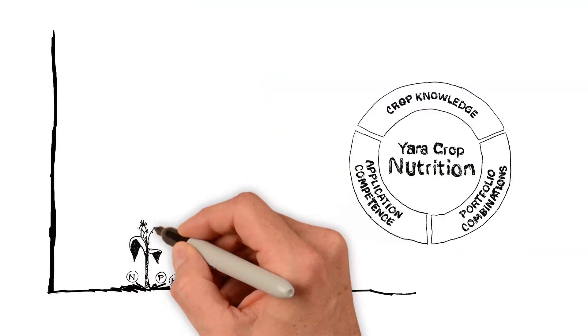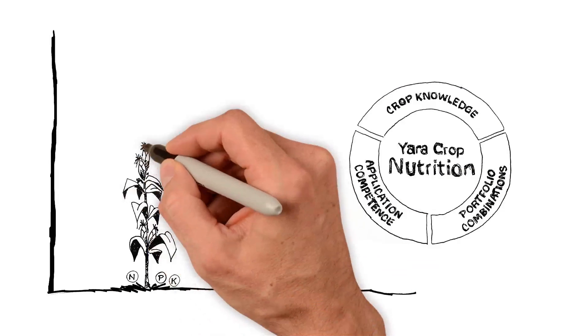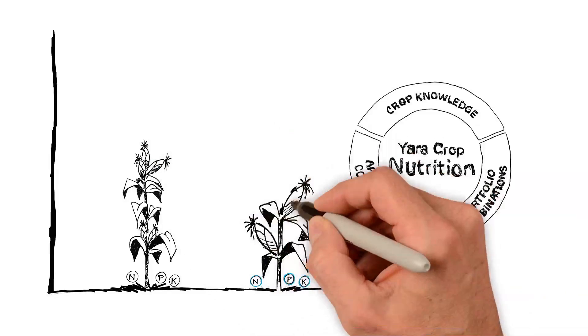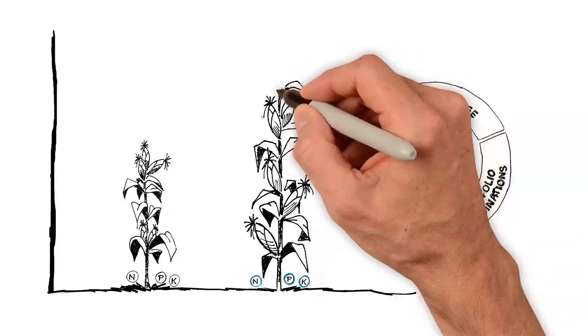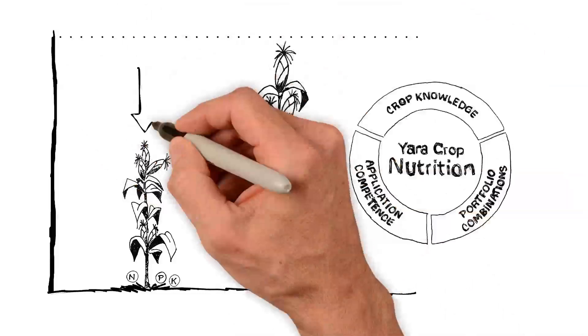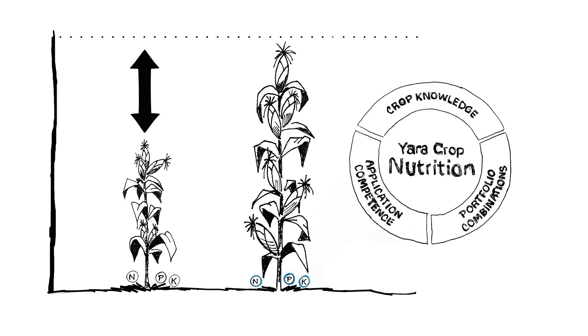Research has shown that even distribution of nutrients means higher yields on crops such as corn, wheat, and cotton. This is why Yara Vita Pro Coat is an essential component of any crop nutrition program.